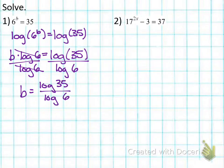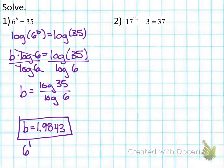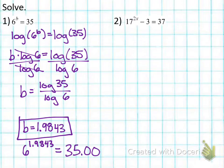At this point I would type this in on my calculator. On the iPad calculator, you type 35, hit the log button, then divided by 6, hit the log button, and enter. Doing that gives you b equals 1.9843. I can always check my answer — 6 to the 1.9843 should give me 35, and it does. It's important to notice that we started with 6 to the b, so the answer should be close to 2. If we had 6 squared, that would give us 36, so our answer should be really close to 2, but not quite there.